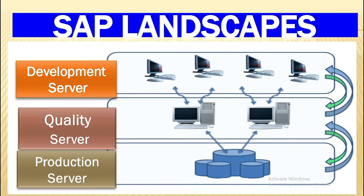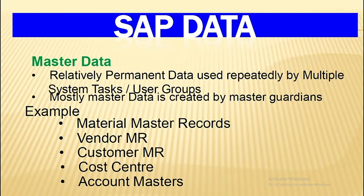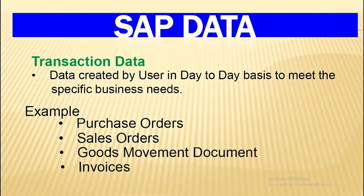In SAP Technical Landscapes, SAP data is categorized into three types. Configuration Data is relatively permanent data created by core module teams — for example, Company Codes, Purchasing Organization, Sales Organization, and Charts of Account. Master Data is relatively permanent data used repeatedly by multiple system users — for example, Material Master Records, Vendor Master, Customer Master, and Cost Center Account Masters. Master Data is mostly created by Master Data Guardians. Transaction Data is data created by users on a day-to-day basis to meet specific business needs — for example, Purchase Orders, Sales Orders, Goods Movement Documents, and Invoices.